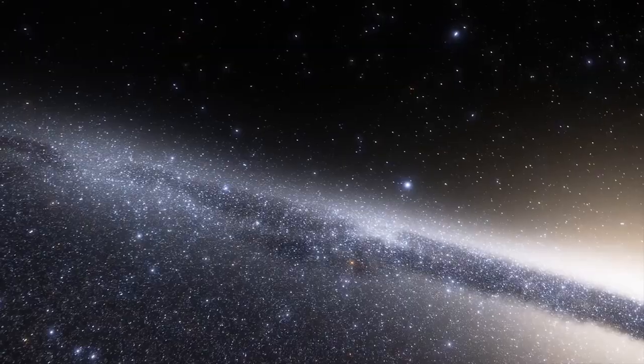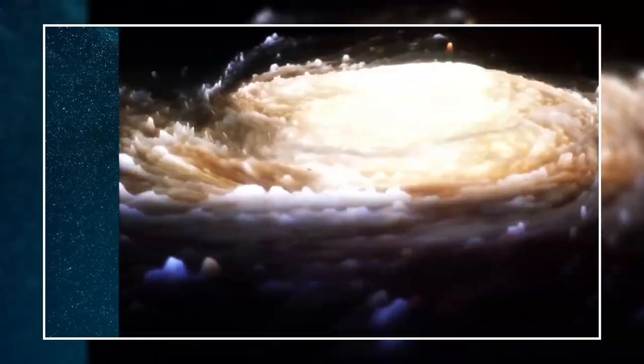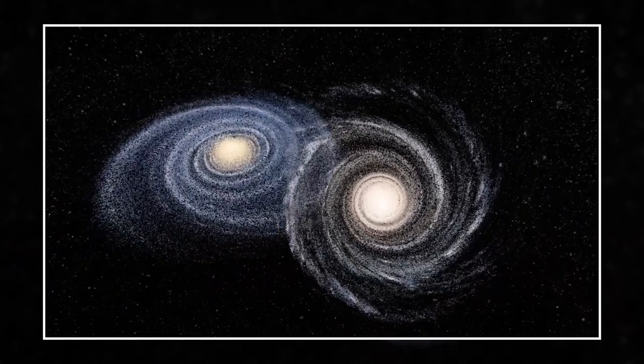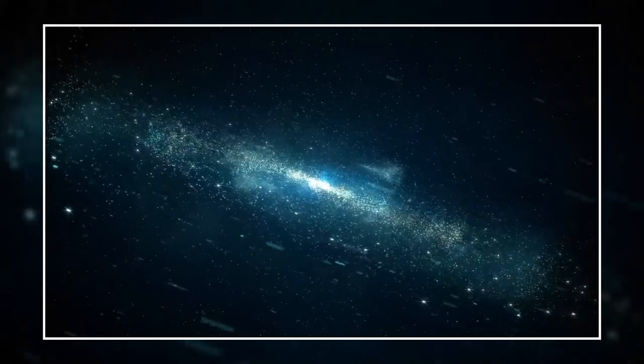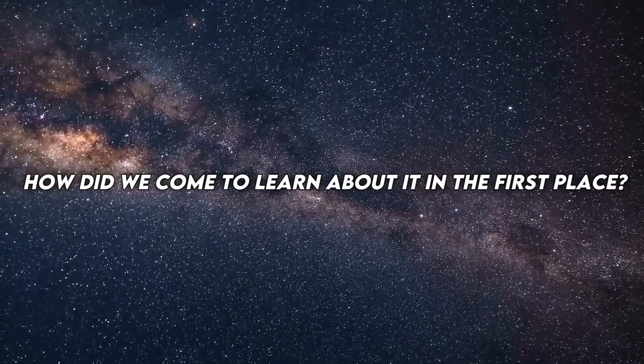By studying the structure and movements of more than 500 stars in the nearby galaxy, astronomers have been able to reconstruct the tumultuous and disastrous history of Andromeda, our closest galactic neighbor. However, how did we come to learn about it in the first place?